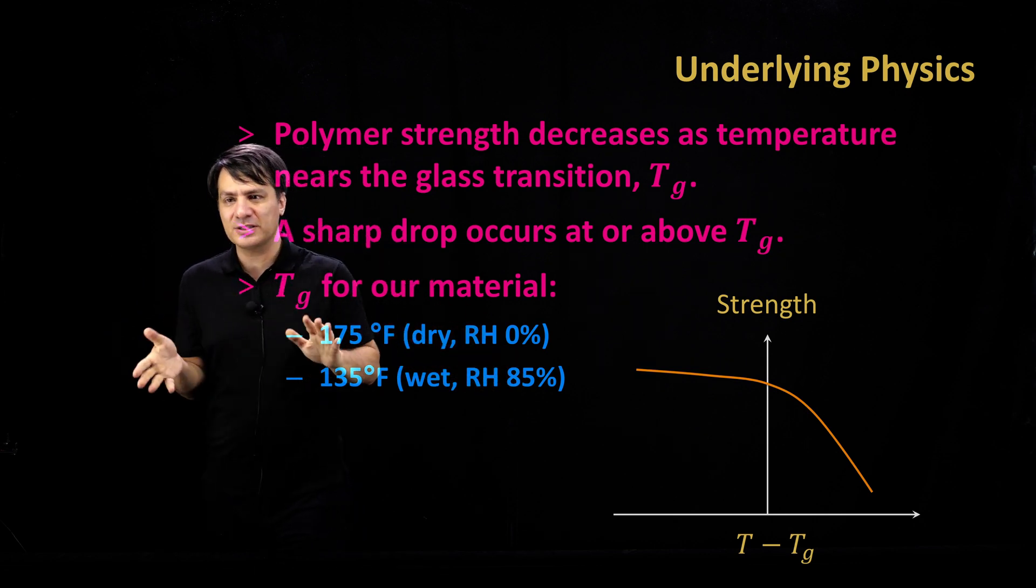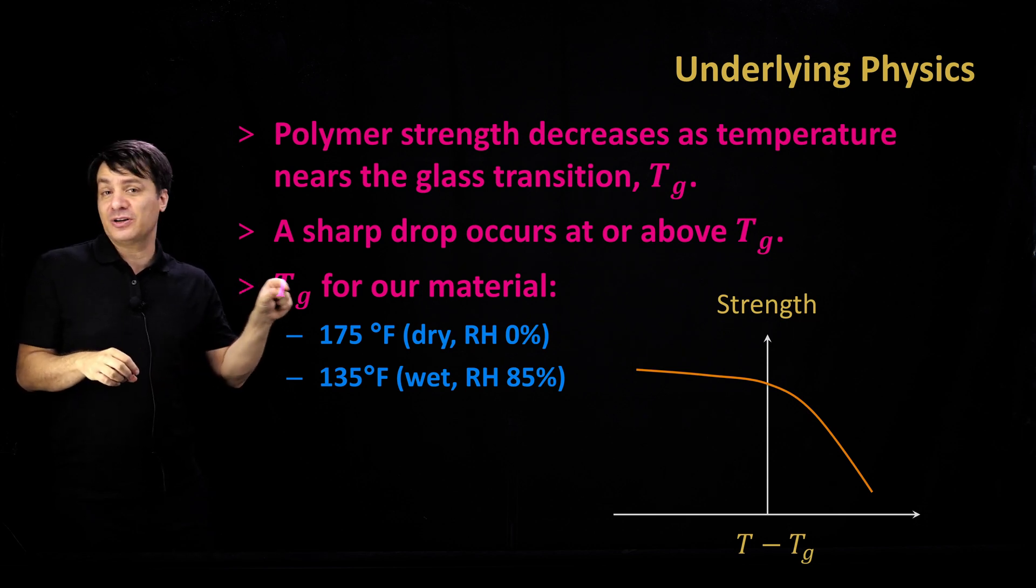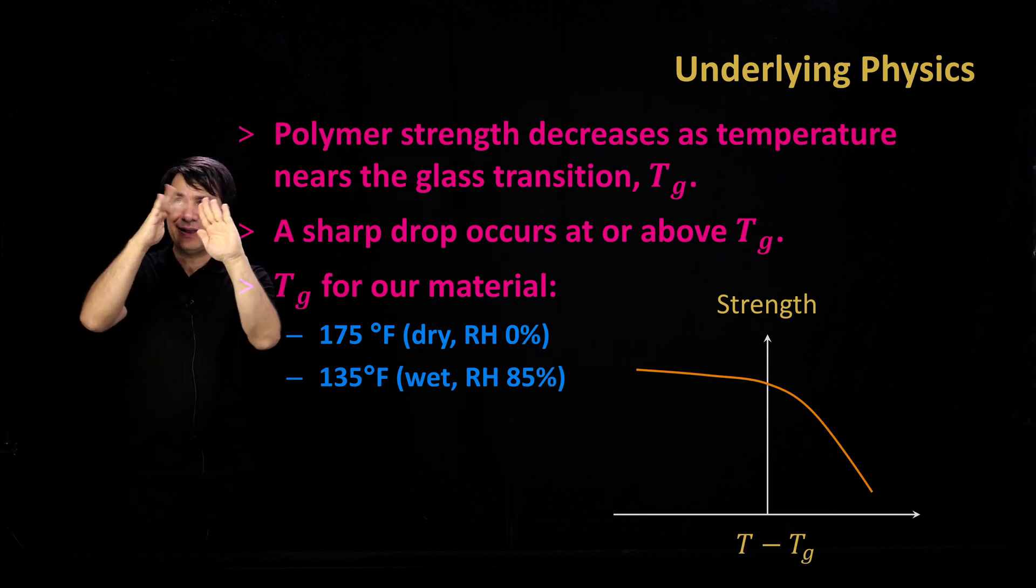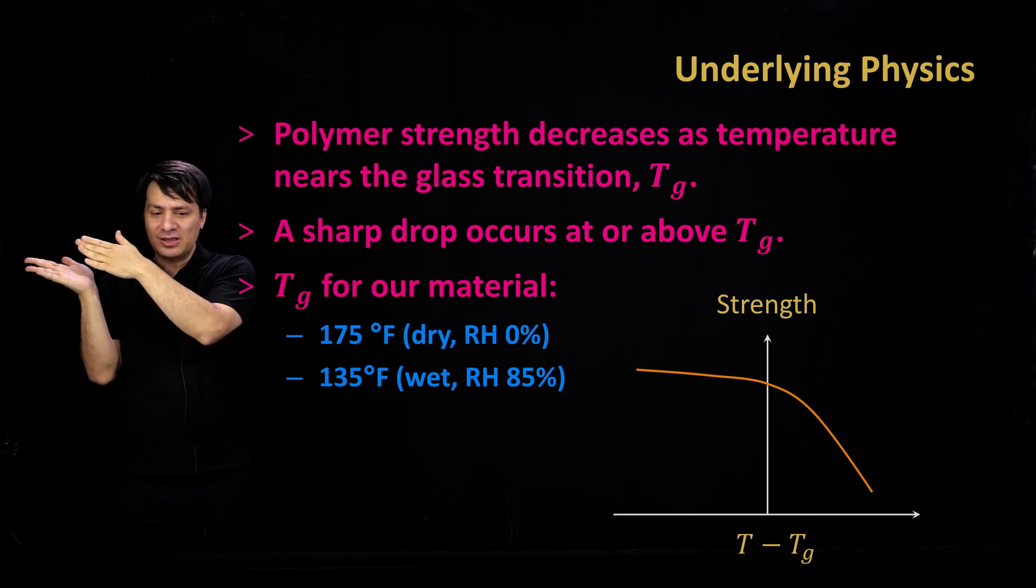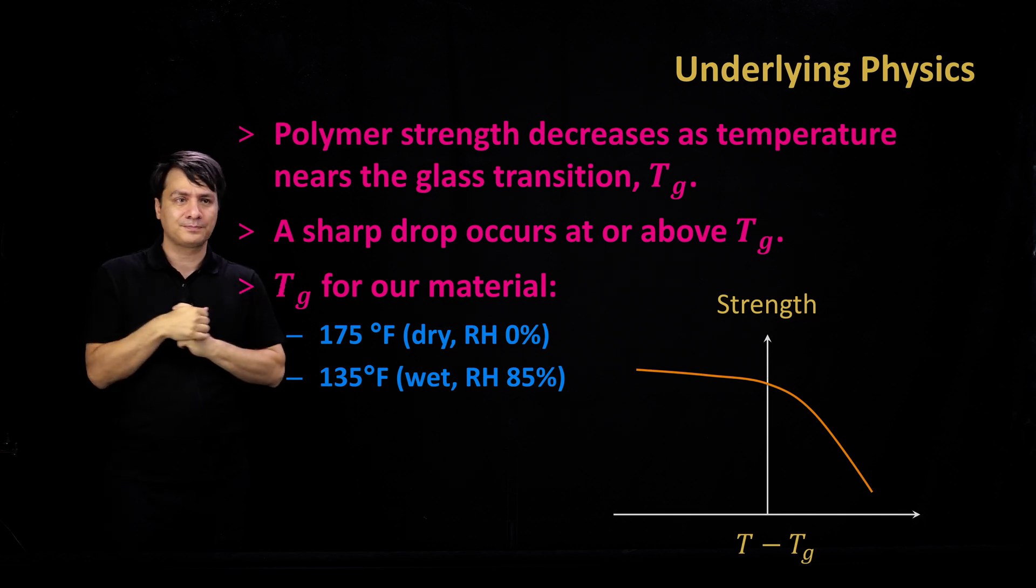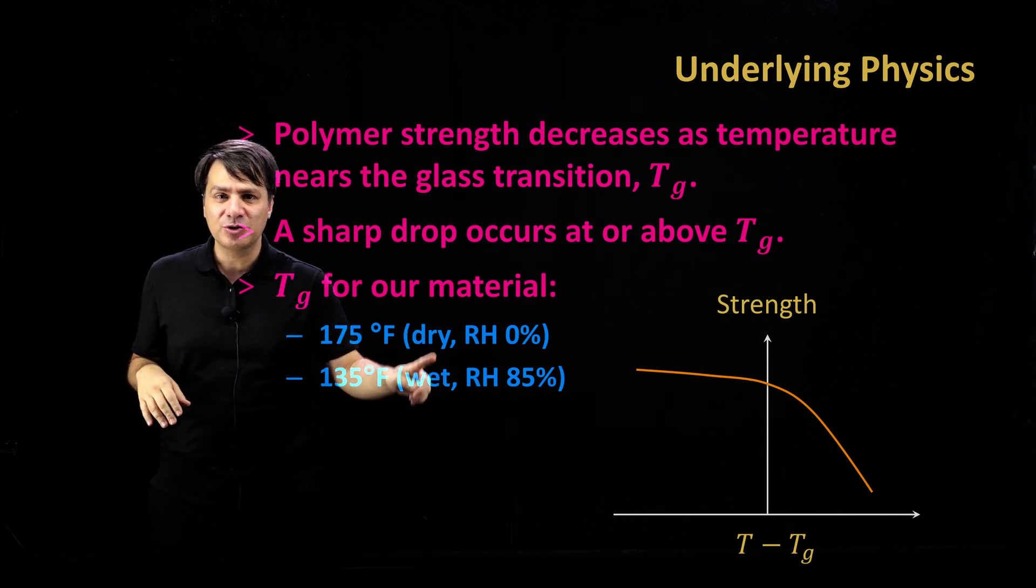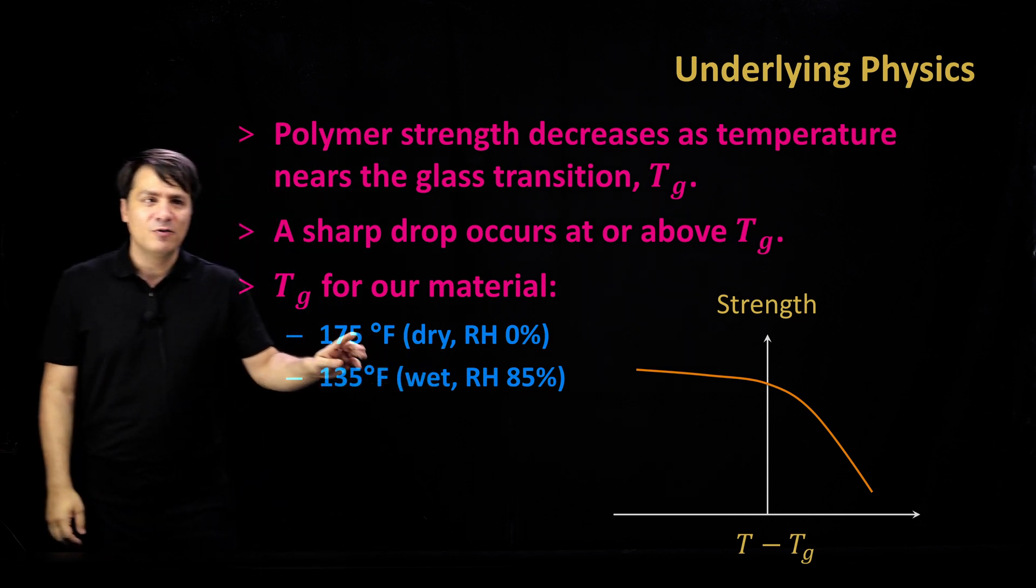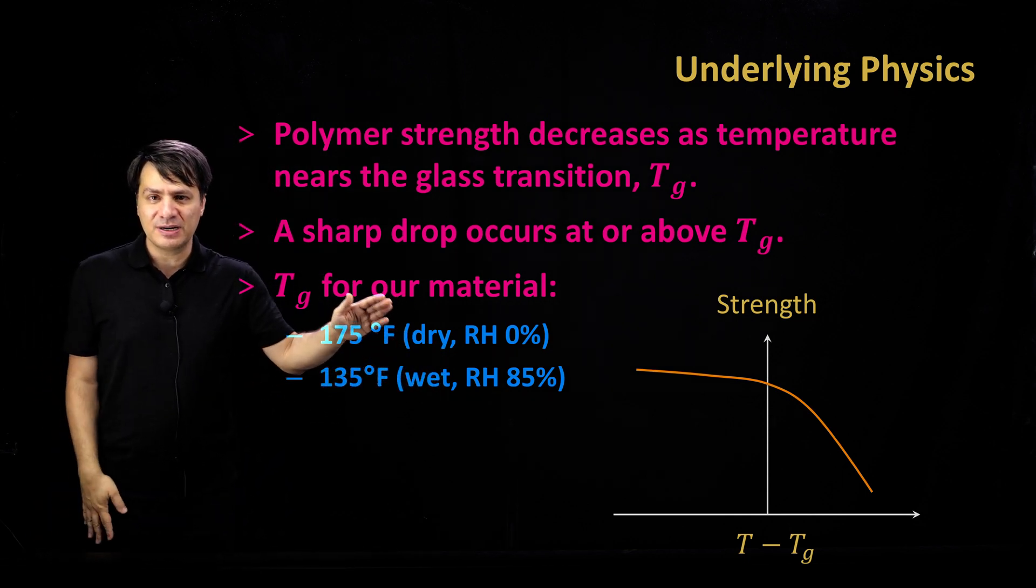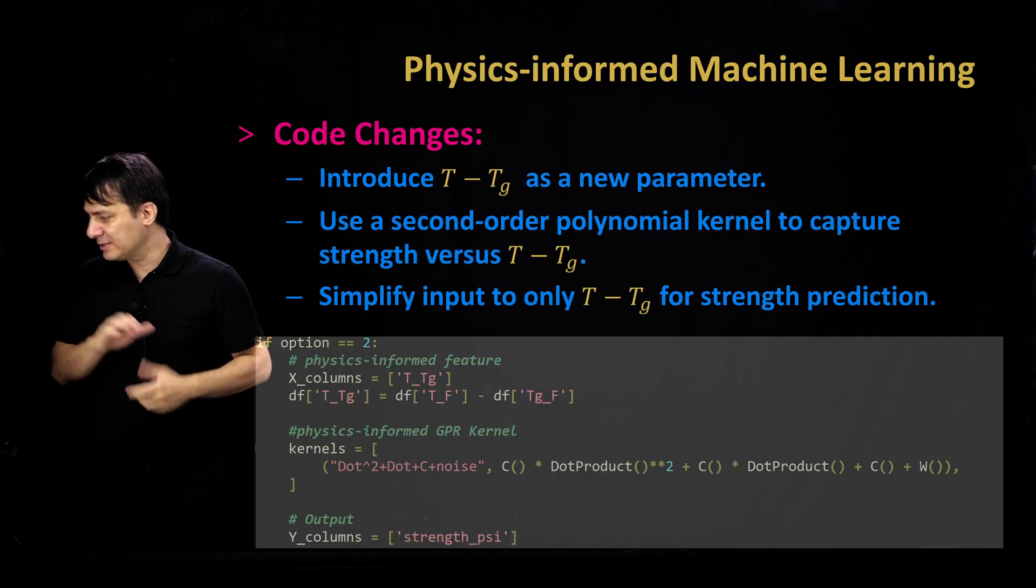And you can think of it as like a high-level second-order equation. It has slopes and there's a transition zone. Again, this is very approximate, but it's a good intuition of how temperature affects strength. If you have adhesive and you are below glass transition temperature, the strength should be high. If you're above glass transition temperature, the strength should be low. The glass transition temperature, that specific temperature is reported in the FAA document for both dry and wet conditions, 0% relative humidity and 85% relative humidity: 175°F and 135°F.